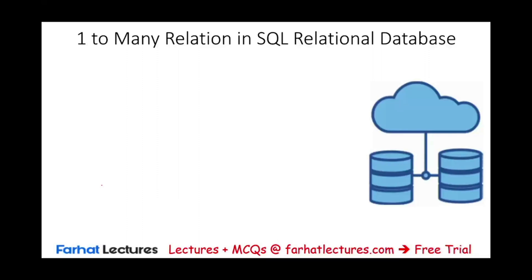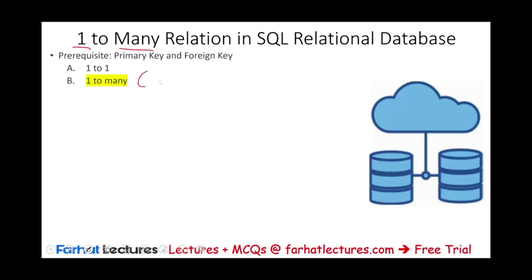Hello and welcome to this session in which we look at one-to-many relation in an SQL relational database. A prerequisite for this session is knowing the difference between the primary key and foreign key and the role they play. In the prior session we looked at one-to-one relation and noted that one-to-one is not common. However, one-to-many is a very common way of relating two tables, and eventually we will look at many-to-many.